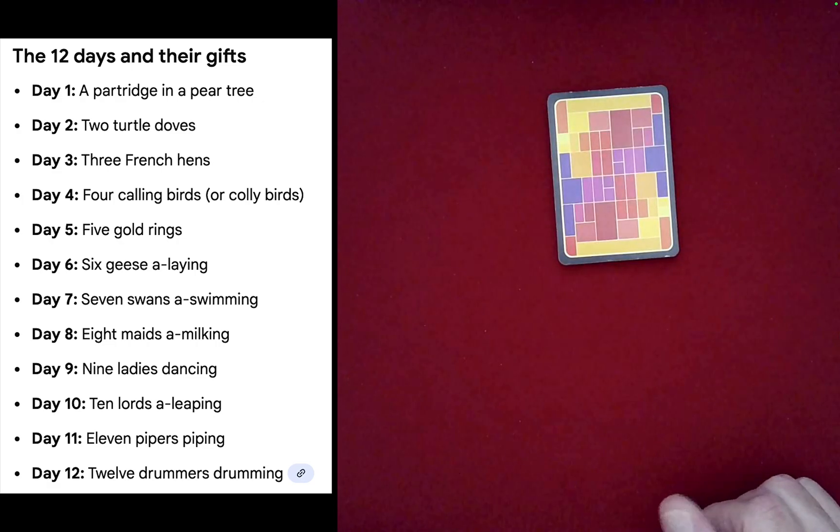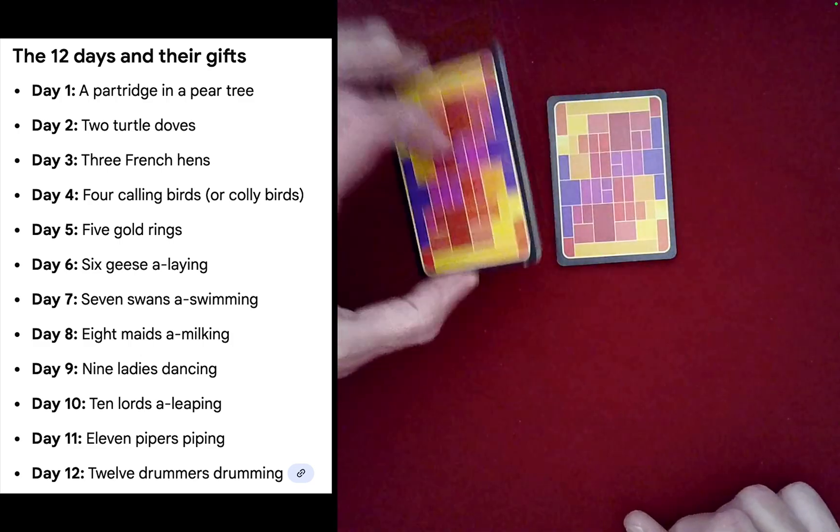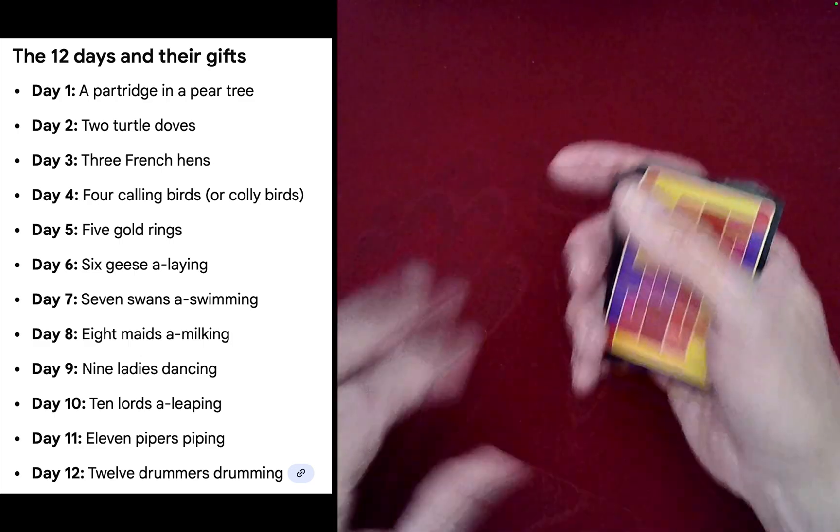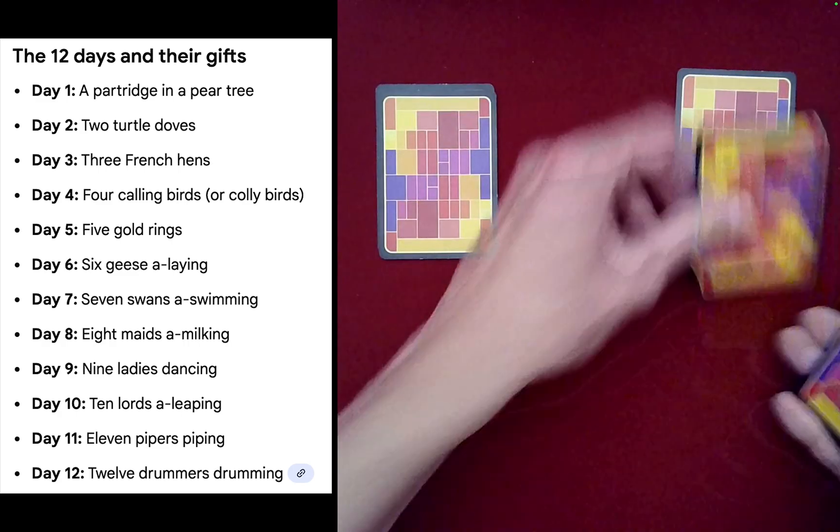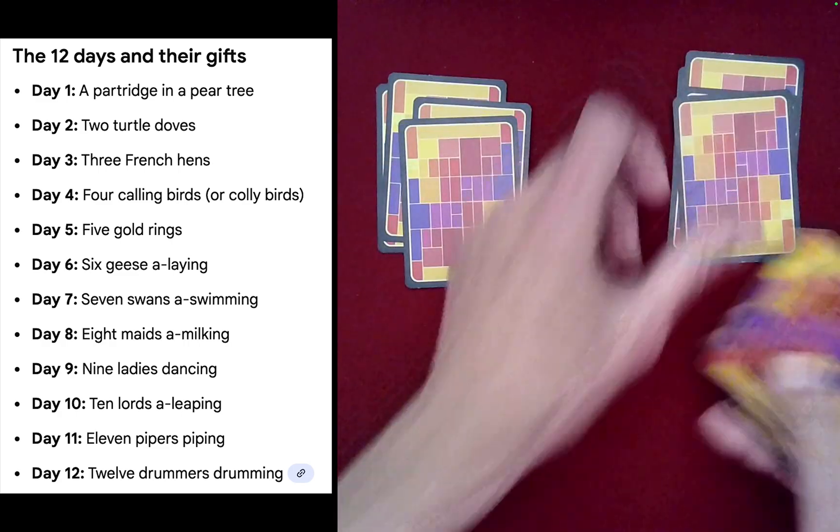It's a great way to mix the cards and then just have one of the spectators cut the cards wherever they would like and complete the cut. Maybe right there. Now what we're going to do is deal out the cards into two piles, one for spectator A and one for spectator B.